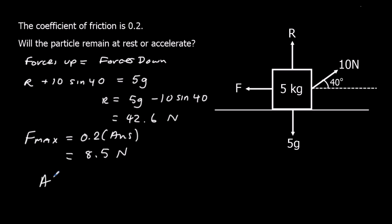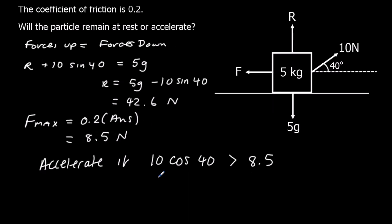So it's going to accelerate if the horizontal part of this, 10 cos 40, is bigger than friction max, which is 8.5. So 10 cos 40 is 7.66, so it won't accelerate. It is not bigger, so not accelerate. Friction will take a value equal to 7.66.